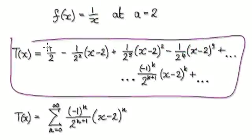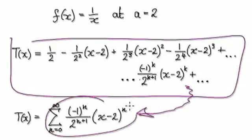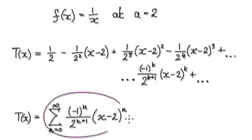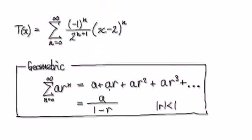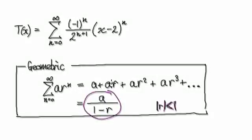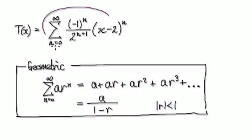We got to this stage in the previous video, and from here you can translate it to this. If you look at this, this is actually a geometric series. When it comes to a geometric series, it will converge if the modulus of r is strictly less than 1. If the common ratio is less than 1, we know this is going to converge.